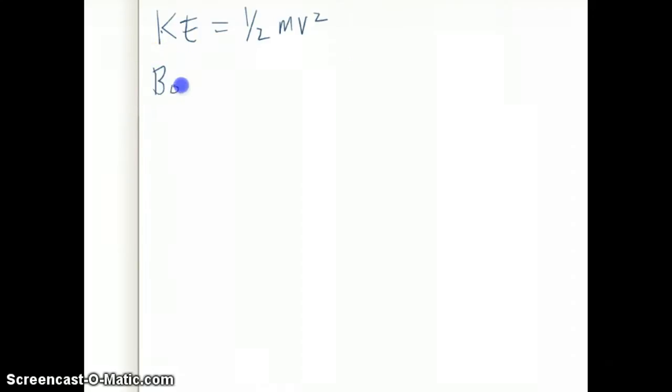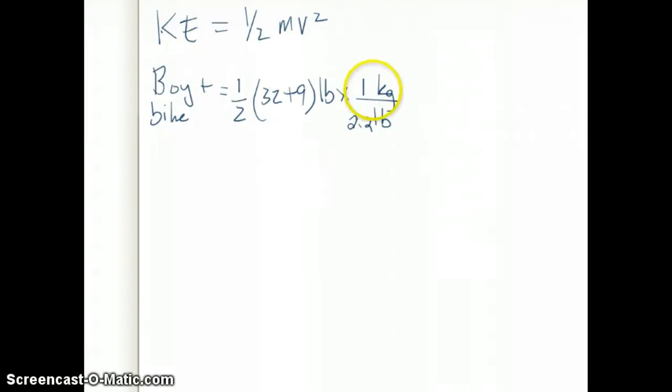So first is the boy, and remember the boy and the bike is one unit here because they're moving, both of them are moving at that speed, so we're going to calculate this both, and I'm just going to write the equation right here, so half, now times, the mass of the weight of the boy is 32, for the bike is 9, so we're going to add both of these, that's with units of pounds, so then you have to convert that pounds to kilogram, and the conversion factors are provided, so I'm just going to put in 1 and 2.2 here. 1 kg is about 2.2 pounds.